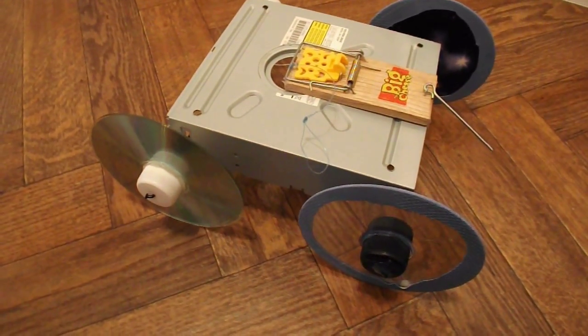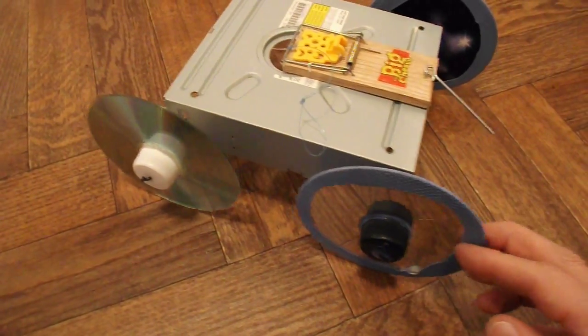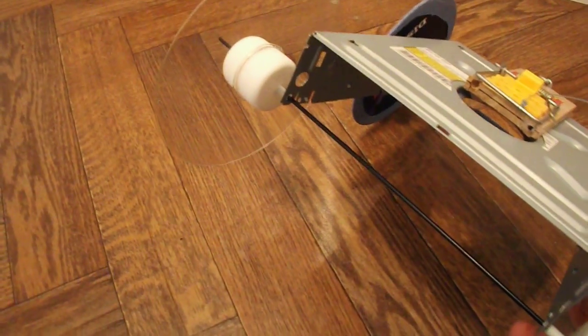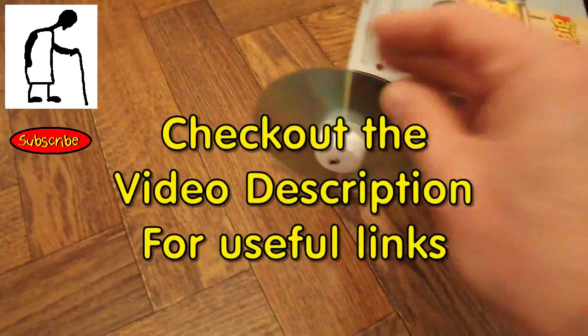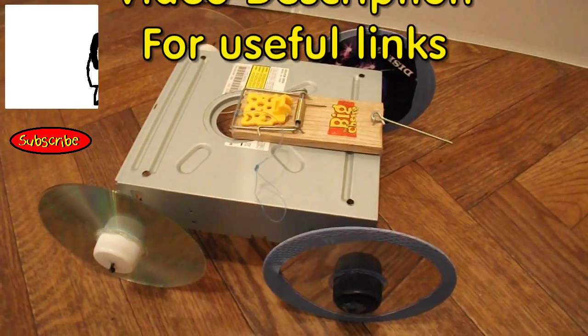So, if you want a really good mousetrap car, the trick there is the bicycle spoke axles because that's reduced the friction significantly. And I didn't even need to put a longer lever arm on it.